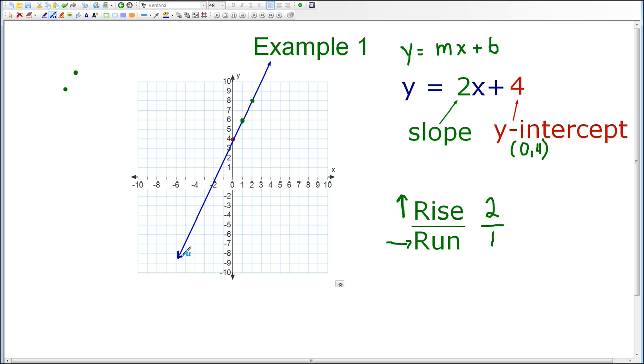And this is the line that represents the equation y equals 2x plus 4. Again, if it's written in slope-intercept form, you know the y-intercept, which is one point, and you can find any other point on the line using the slope, rise over run. This concludes example number 1.